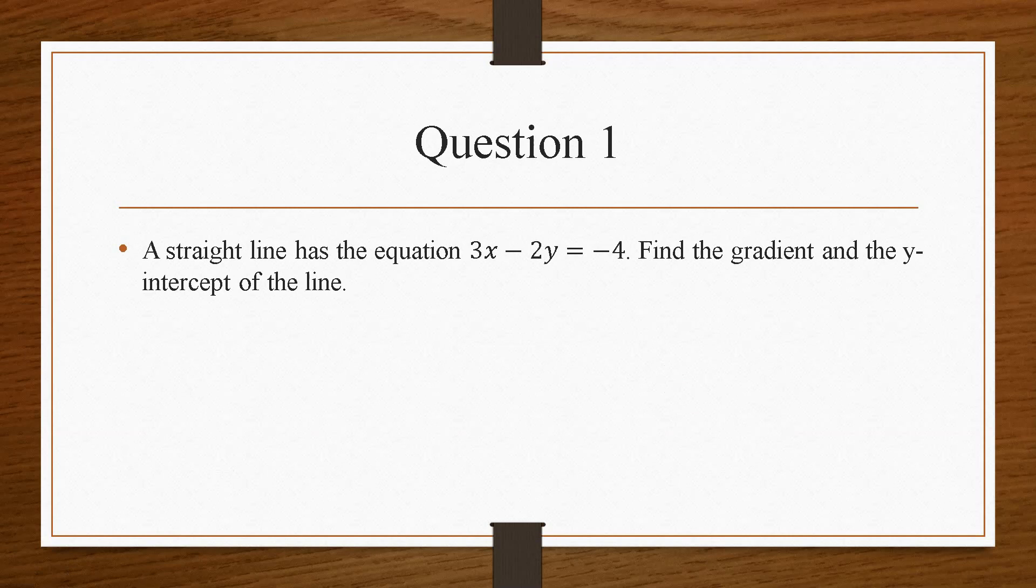question number one says a straight line has the equation 3x minus 2y equals minus 4. And we have to find the gradient and the y-intercept of the line. So this is basically a rearrangement of this equation to look like y equals mx plus c.